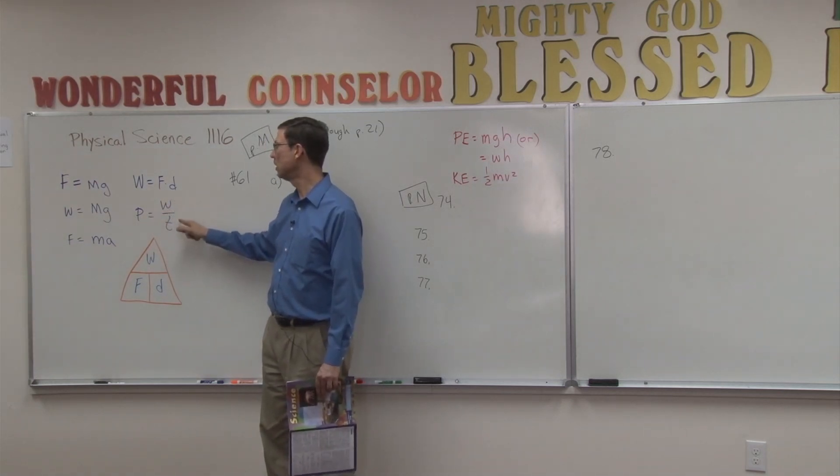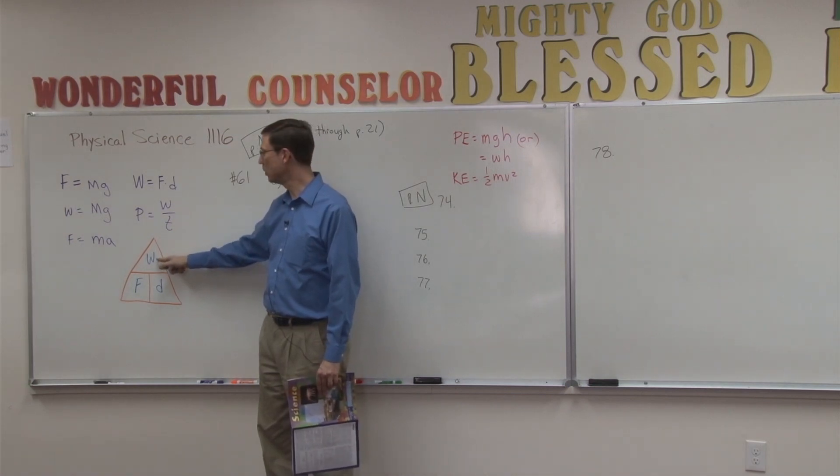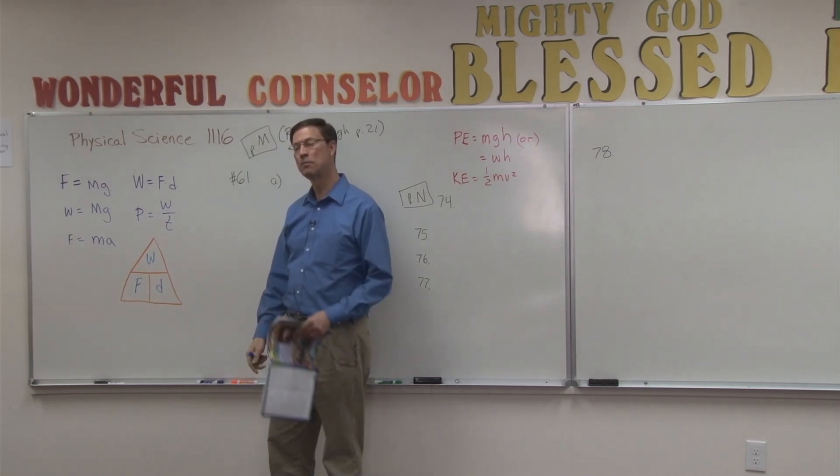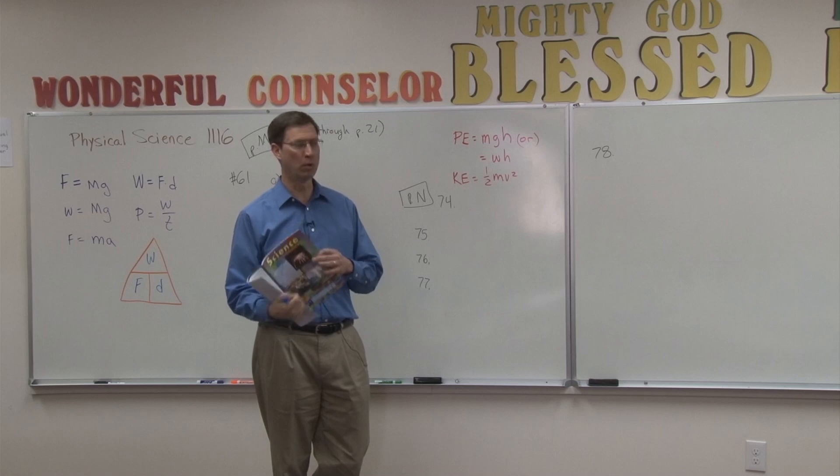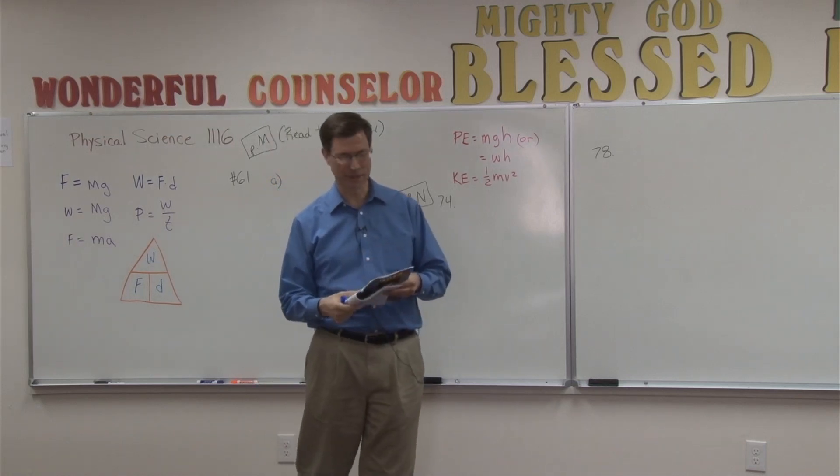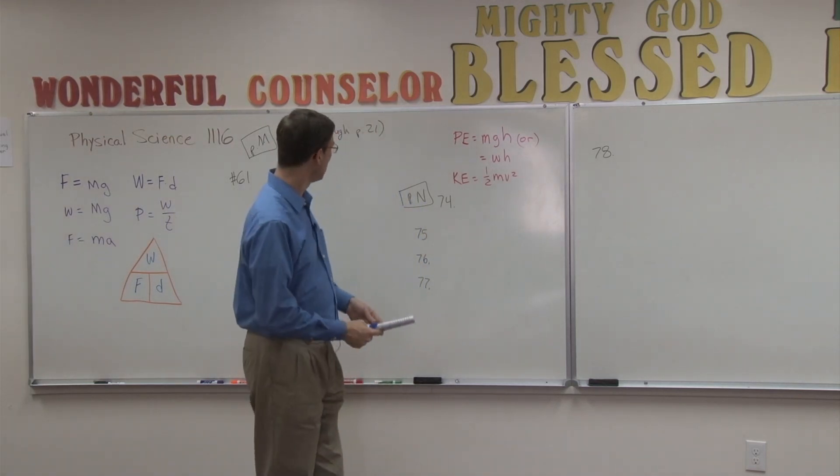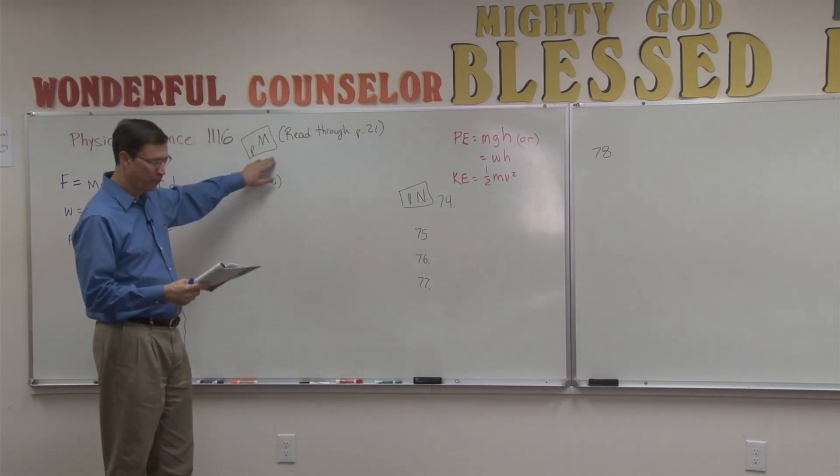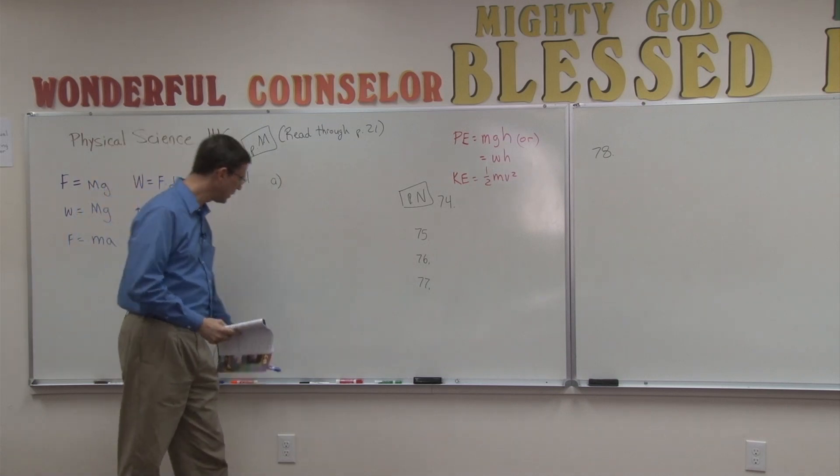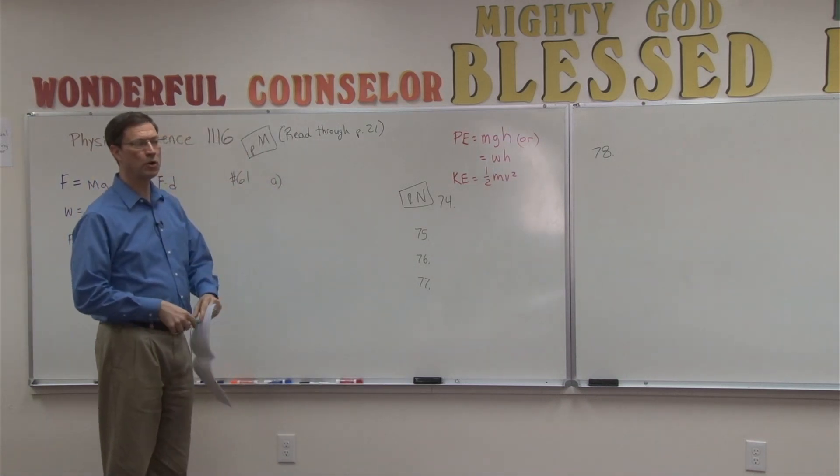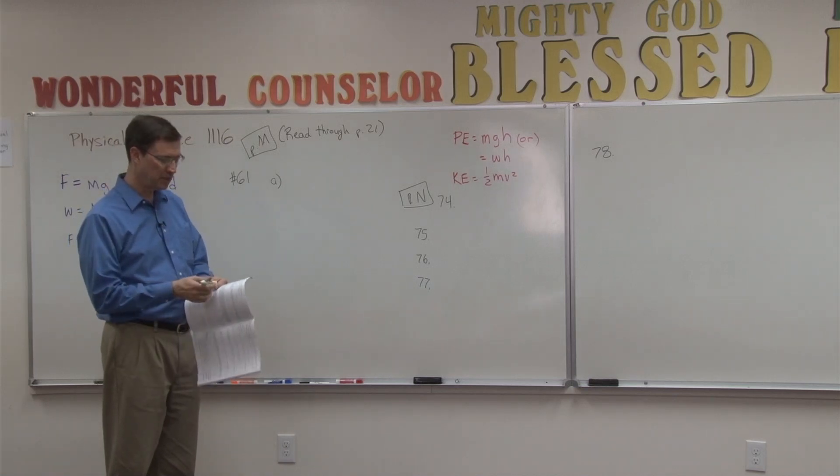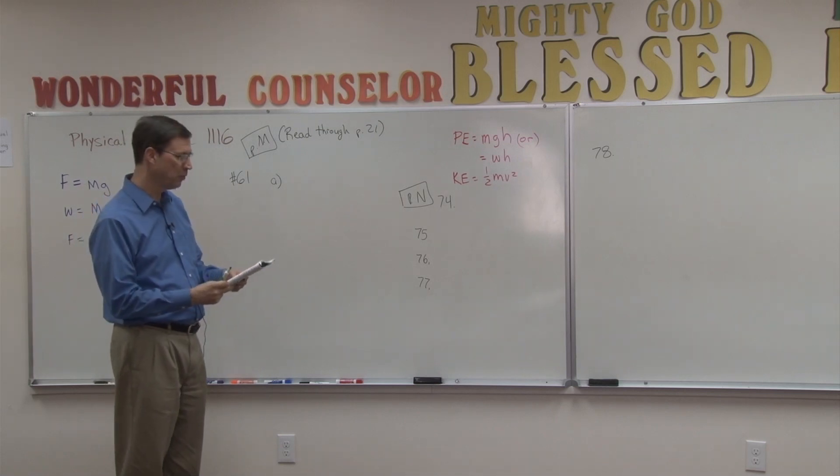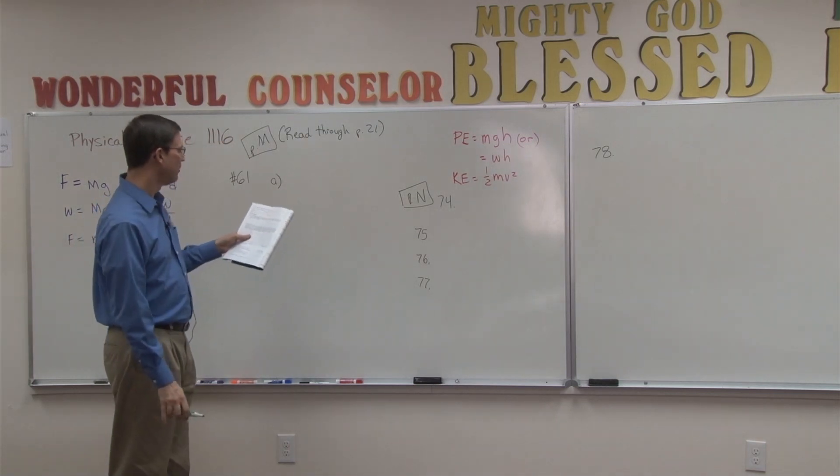You can do the same thing a little bit later in this section when you solve for power. Power is work divided by time. So work would go on the top, time in the bottom, and divide, and you would have the power. Let's take one of the problems that I'm always having to sit down with students and go through step-by-step, and that's problem 61 on page M. So open your activity pack to page M, follow along with me, have your calculator ready, and let's try to do some of these. I'm going to set them up, but I'm not going to solve the problem. I want you to finish them, but I want you to see where the information is coming from.